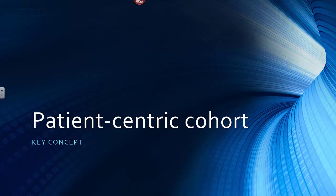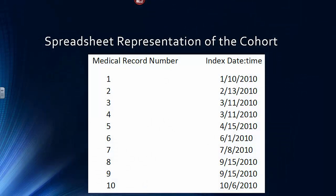Let's explore the meaning of a patient-centric cohort. At its most basic level, you can think of a cohort of patients as made up of two columns of a spreadsheet. Column one is a medical record number — the identifier for the patient. Column two is a date and time called the index date time. All analyses will be anchored from this index date time, and all measurements of elapsed time to success or failure will start at the index date time.